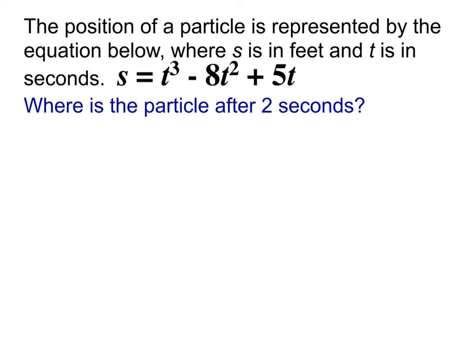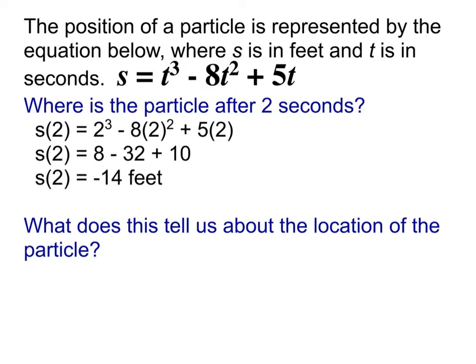We want to figure out what the position is after two seconds. What am I going to do to figure out the position after two seconds? All we have to do is plug in the two for t. There's no fancy derivatives or anything like that here because it's already the position function — you're just going to plug in two for t. When we do so, we end up getting a final answer of negative 14 feet. So S of 2 is negative 14.